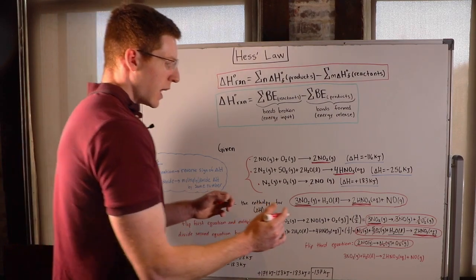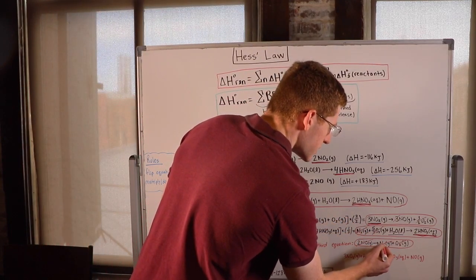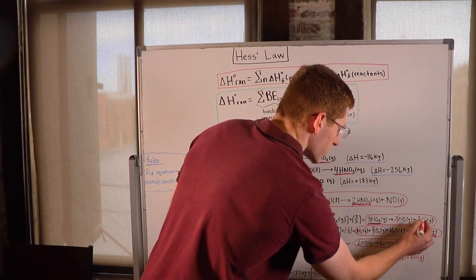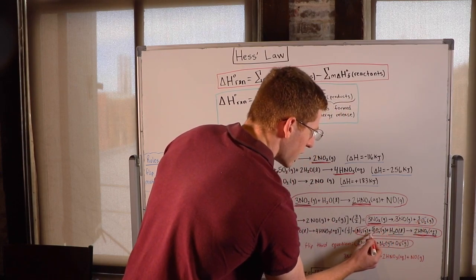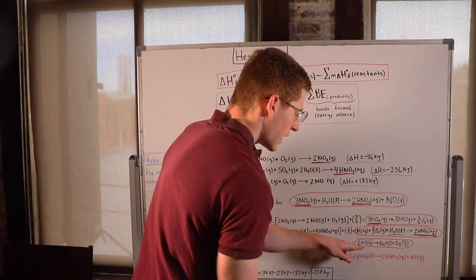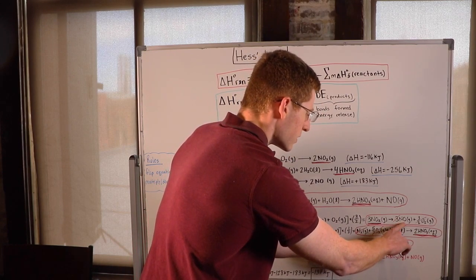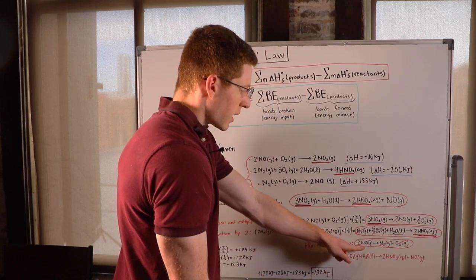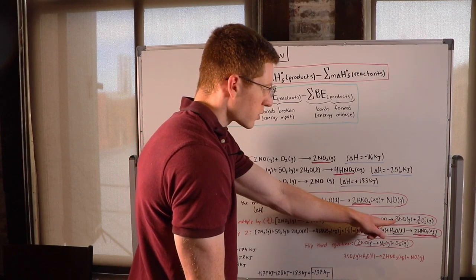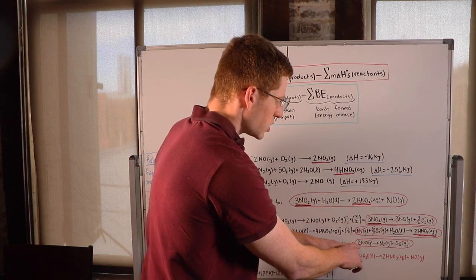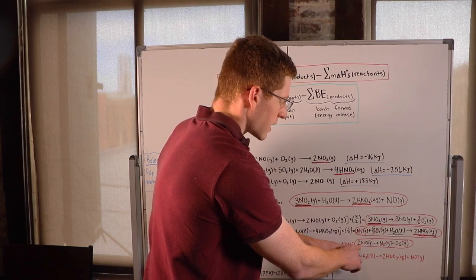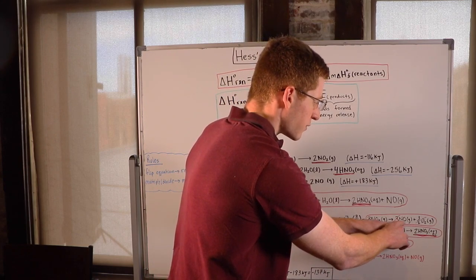So now, I've canceled out this N2 with this N2, this O2 and 3 halves O2 with this 5 halves O2. And you notice here, I have an NO and an NO that can cancel out. But I have 2 over here and 3 over here. So this 2 will cancel out, and then I can cancel out 2 of these. So I'll be left with 1 NO.